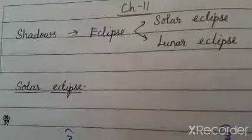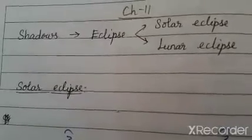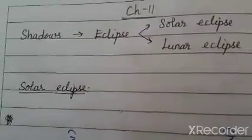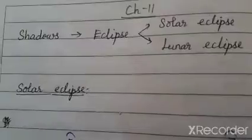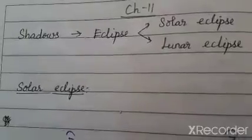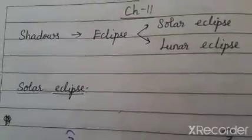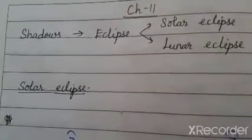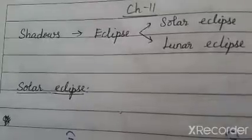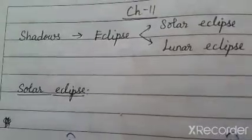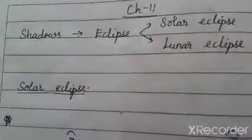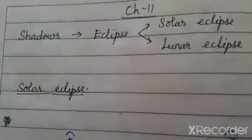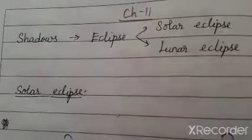Good morning children. Today we are going to see physics chapter 11. We have already finished the fair notes of this chapter, but I still have one more topic to cover — that is solar eclipse and lunar eclipse. So what did we see in this chapter?